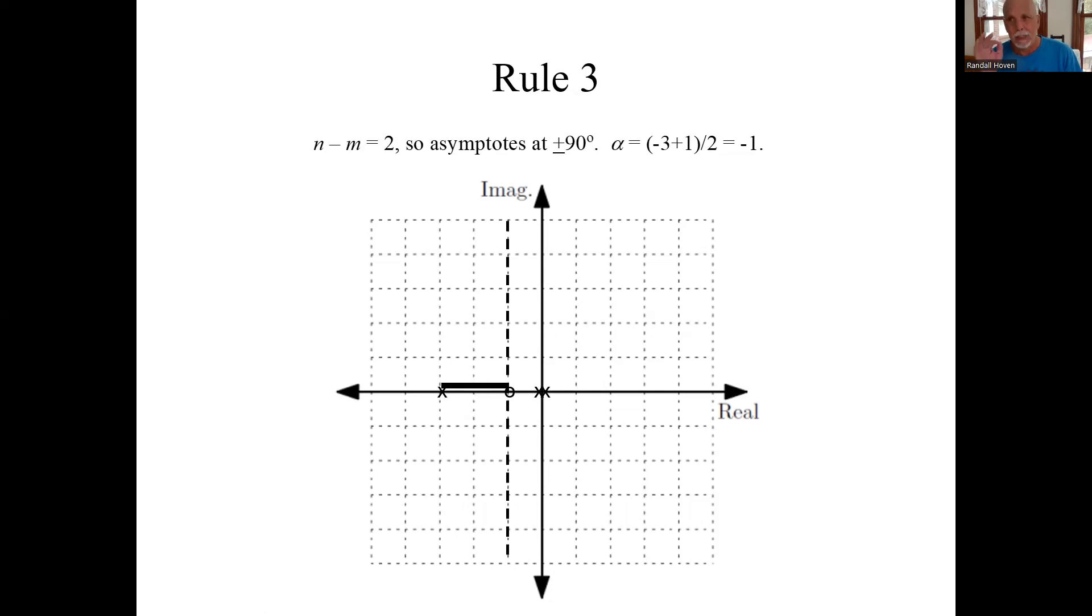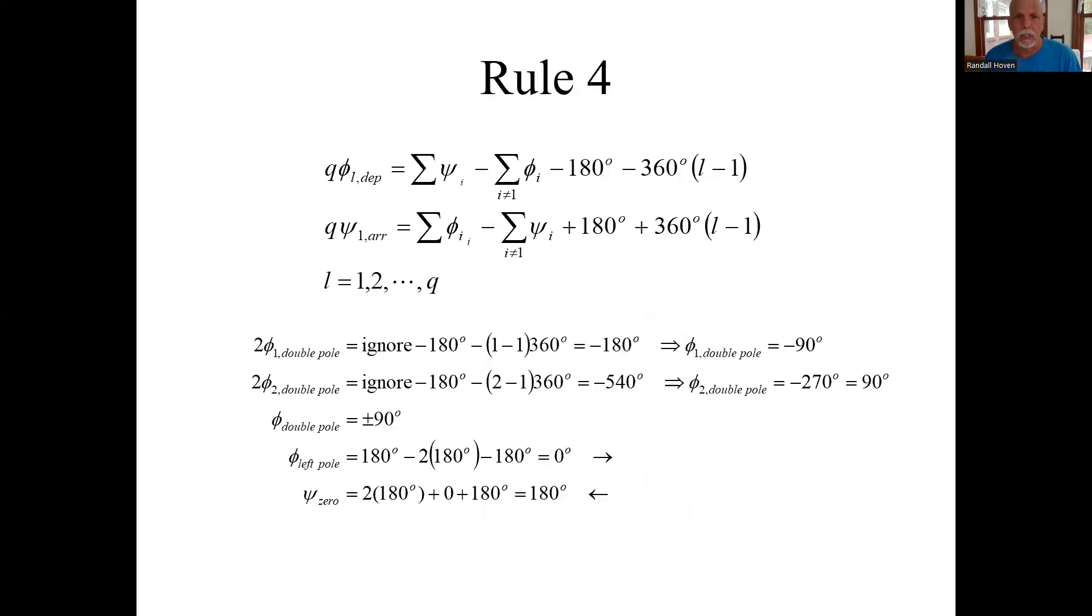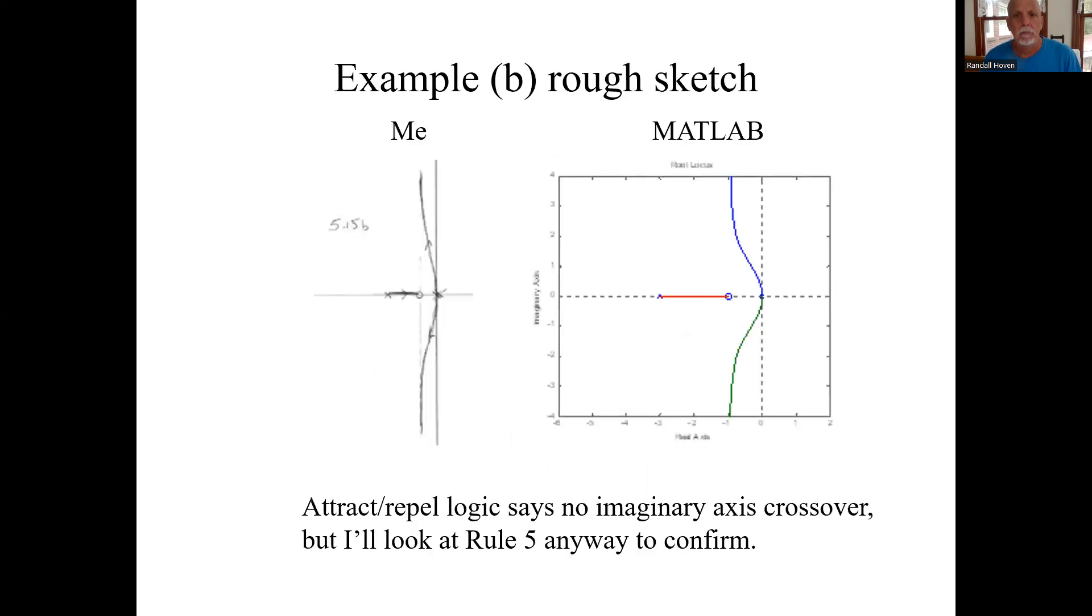To make sure that doesn't happen, we'll use rule six. So thinking it's not going to happen, we'll go with our first option and say, here is our root locus sketched by hand. And when we check with MATLAB, it confirms.